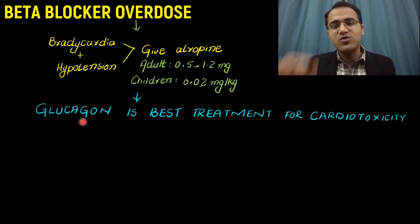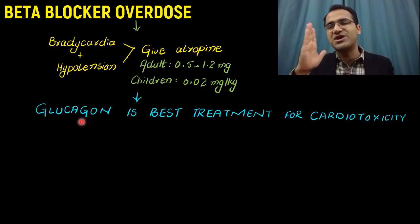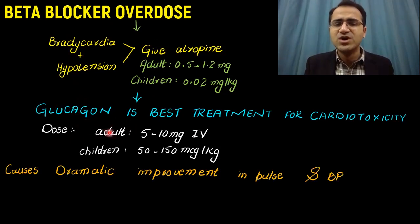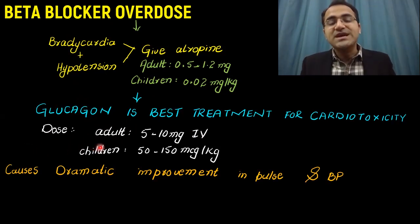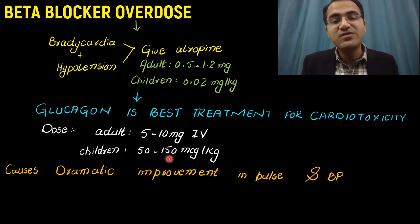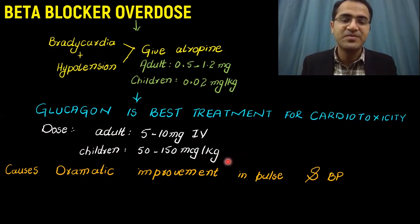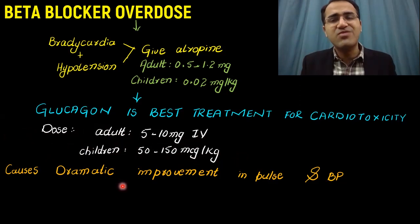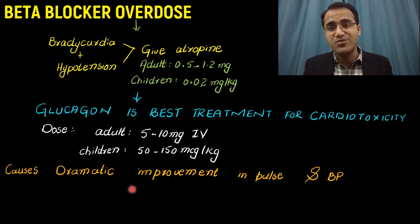You give glucagon. Glucagon is the best treatment for cardiotoxicity. It is like an antidote for beta blocker overdose. You give it with the dose in adults 5 to 10 mg IV. And in children, you give it 50 to 150 micrograms per kg according to the weight. It causes dramatic improvement in the pulse, corrects the bradycardia, and corrects the hypotension.